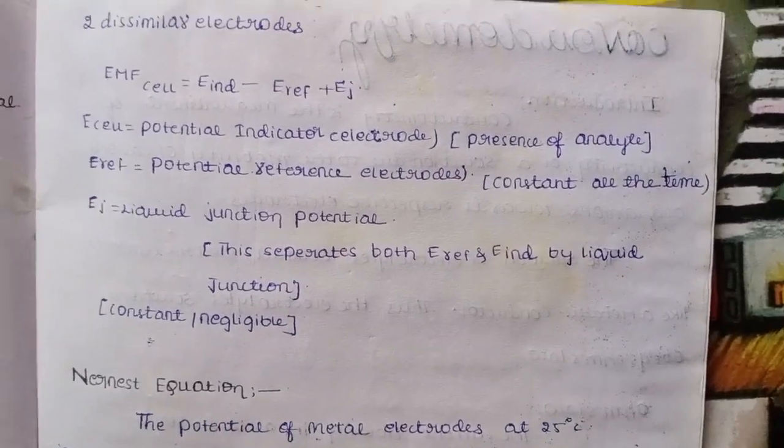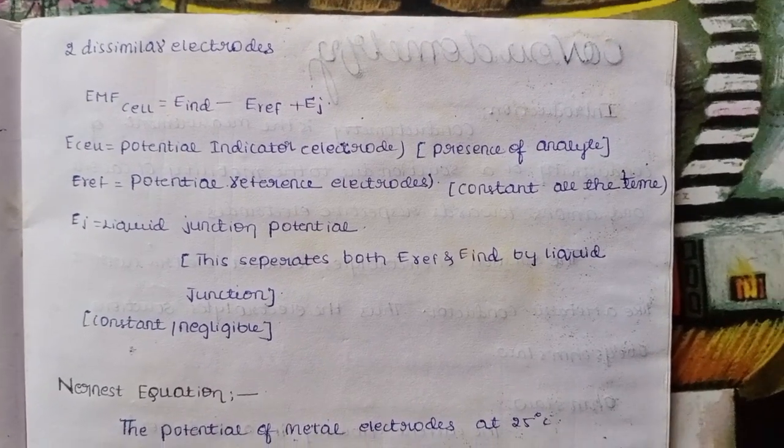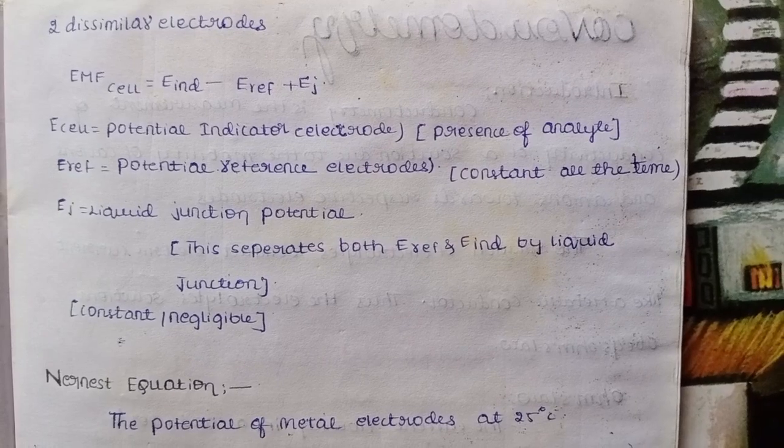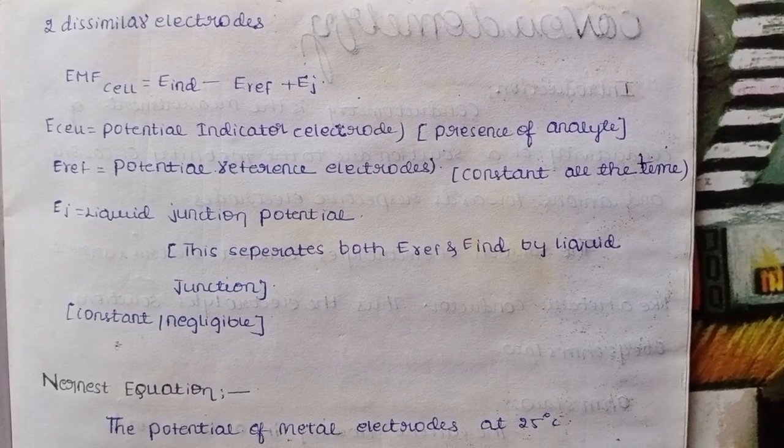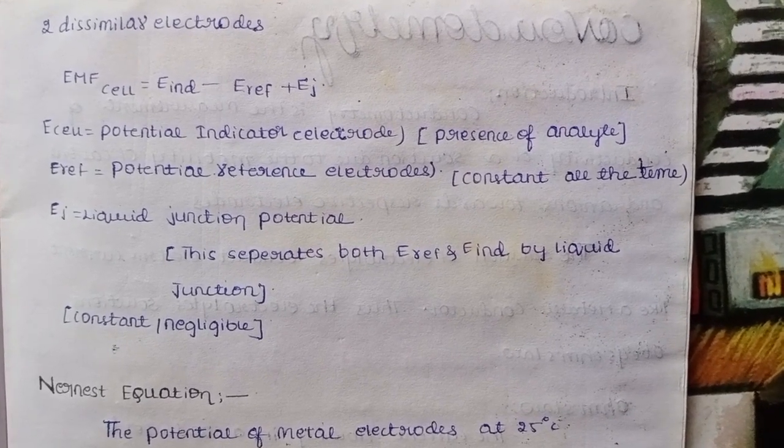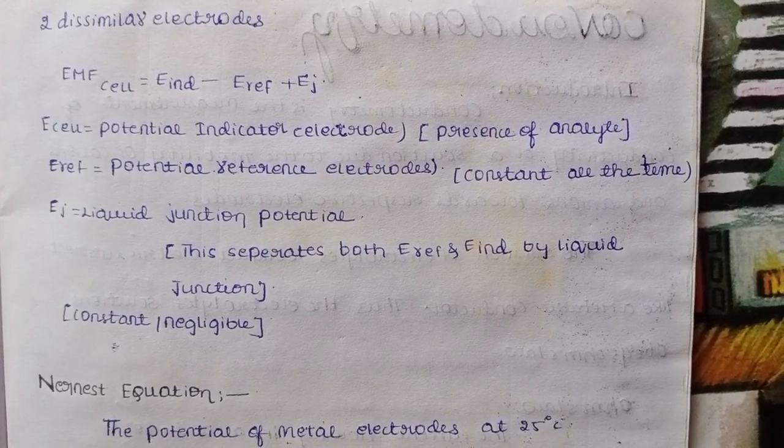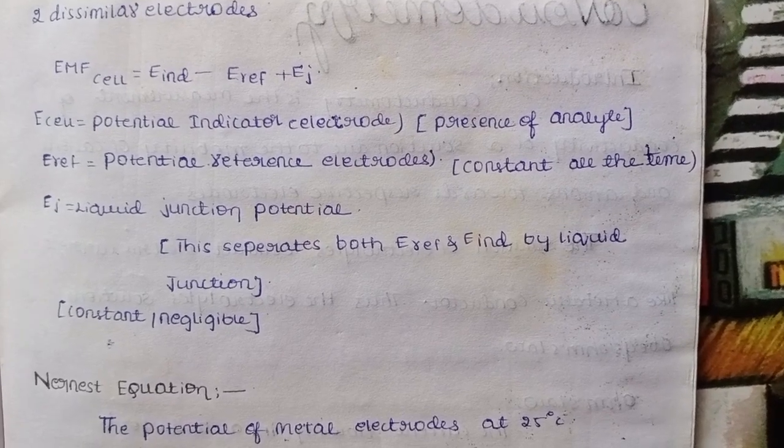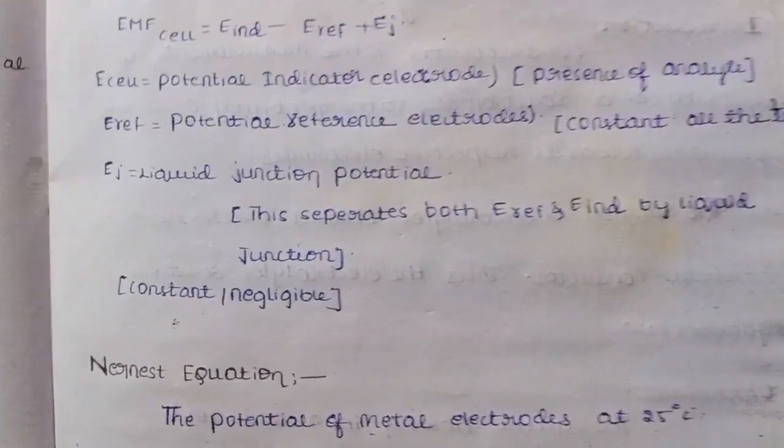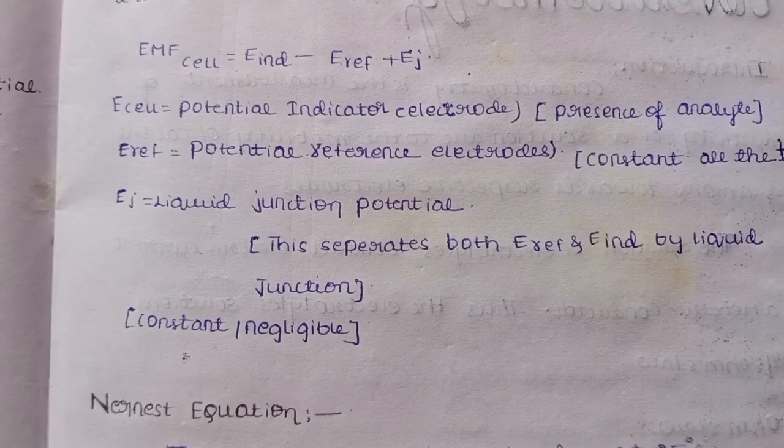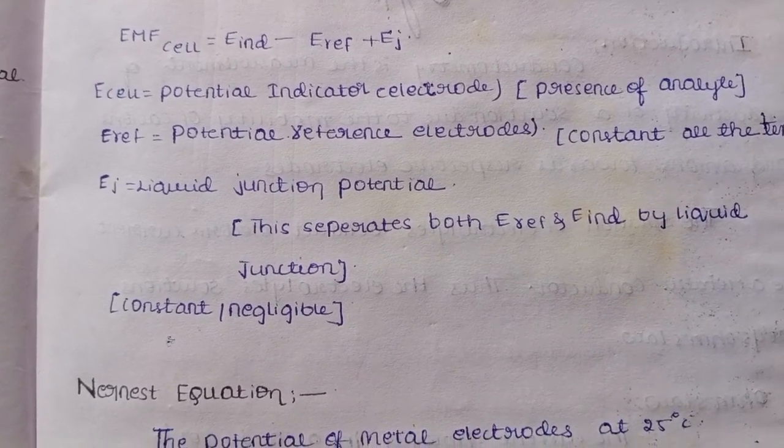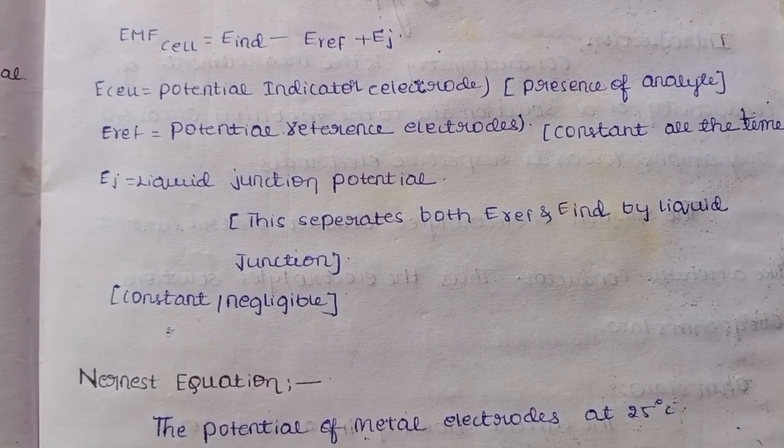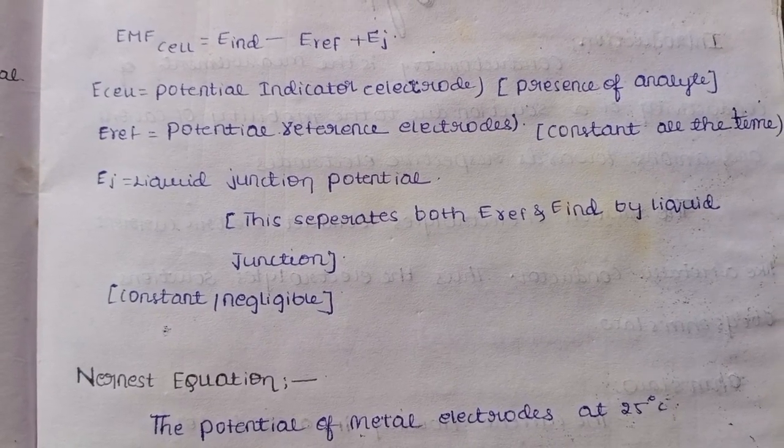What are the two dissimilar electrodes? So the potential that exists in between the reference as well as indicator - EMF cell. EMF cell is equal to E indicator minus E reference plus E j. So this is the formula. EMF - electromotive force within the cell.